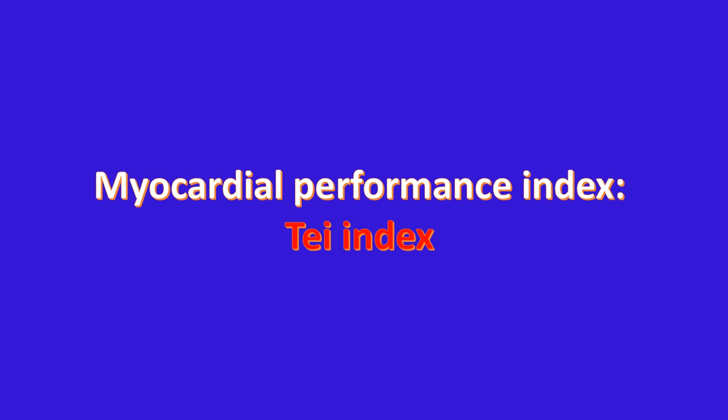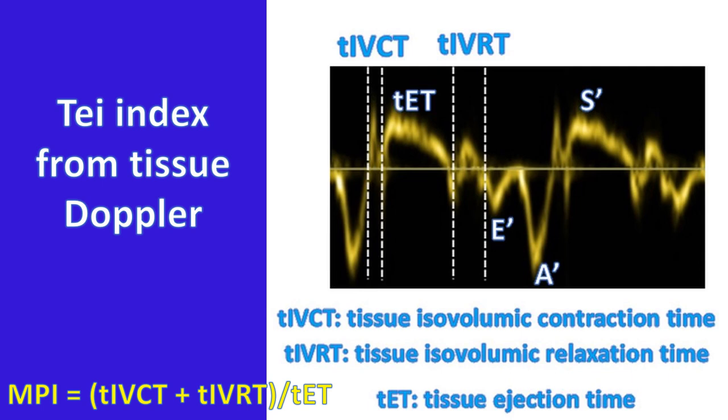Myocardial performance index has different normal ranges for different age groups and for the left and right ventricles, though it is roughly a little more than one third. Advantages of MPI are that it is simple to estimate, reproducible, not affected by geometry, and assesses global function. Downsides include non-simultaneous acquisition, load dependence, variation with heart rate, age, body surface area, and rhythm, as well as being non-specific — unable to differentiate between systolic and diastolic dysfunction — and susceptibility to pseudo-normalization.